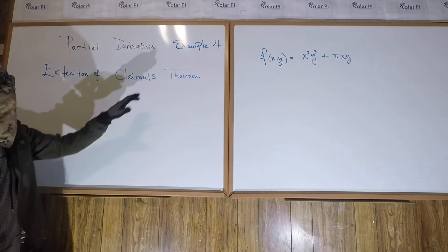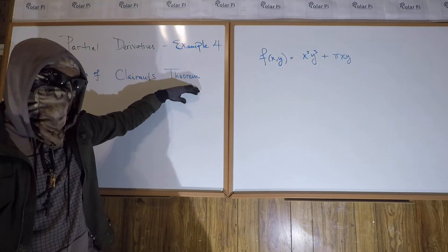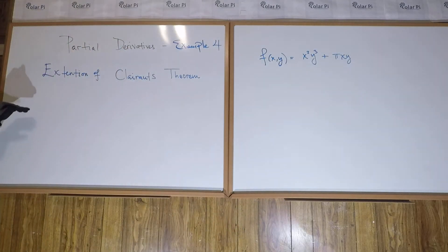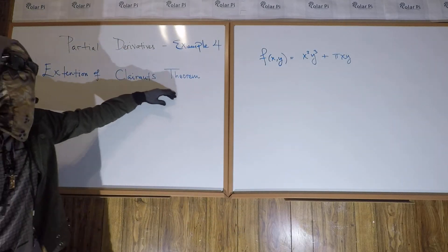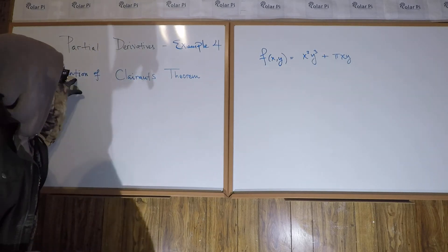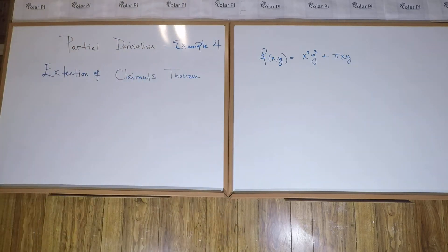Now, in the last example, example 3, we came across Clairot's theorem, a.k.a. Young's theorem. And this, perhaps, final example, we're going to look at an extension of Clairot's theorem. Not quite sure if extension is spelled with a T right there or an S, but from now on it's a T.